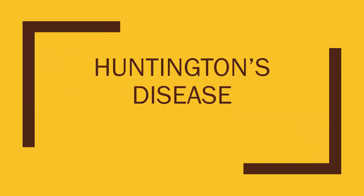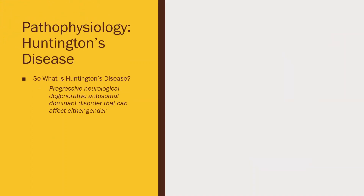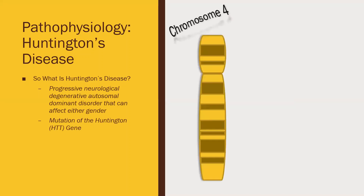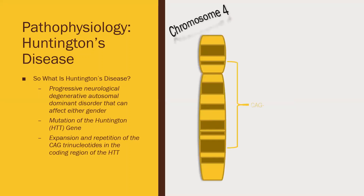Huntington's disease, also known as HD, is a progressive neurological degenerative autosomal dominant disorder that can affect either gender. It is based on the mutation of the Huntington gene on the fourth chromosome, and this mutation caused the expansion and repetition of the CAG trinucleotide in the coding region of the HTT gene.